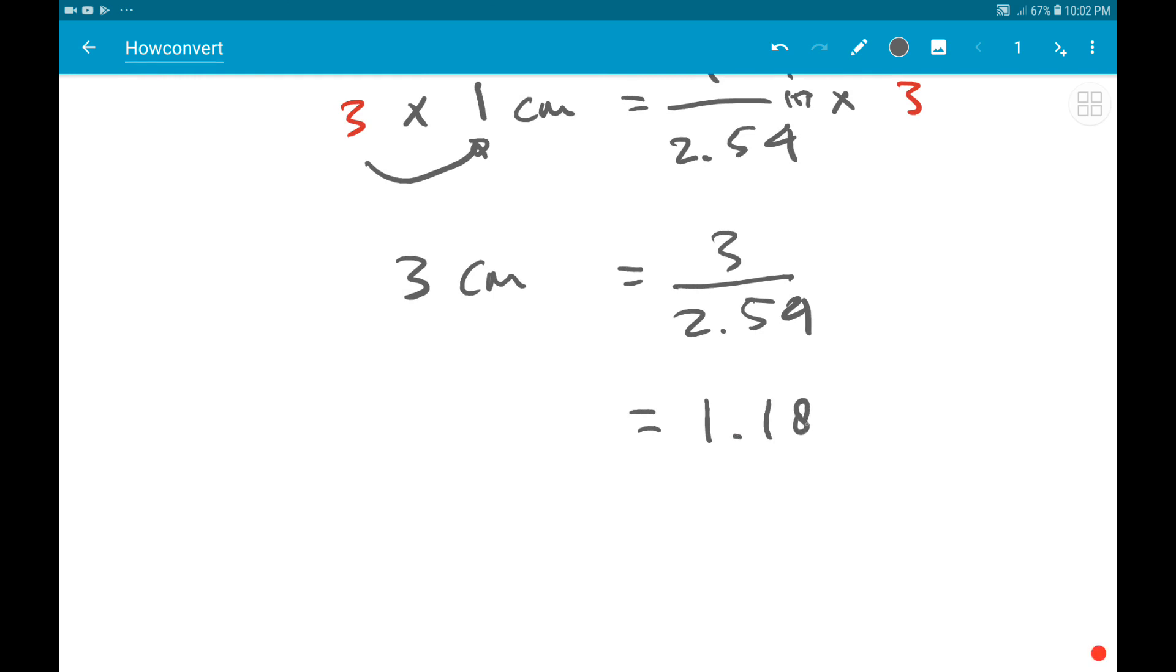So 3 centimeters equals 1.1811 inches. And that's it! Thank you so much for watching, and see you in another video. Bye bye!